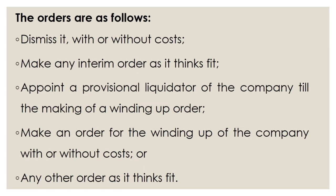The orders are as follows when the tribunal gets the petition. First, the tribunal can dismiss it with or without cost. Second, make any interim order as it thinks fit. Third, appoint a provisional liquidator of the company till the making of a winding up order. Fourth, make an order for the winding up of the company with or without cost, or any other order as it thinks fit.